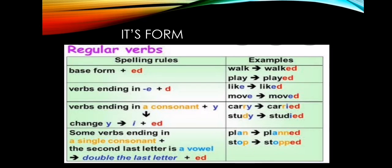Third rule: a verb ending in a consonant plus -y, we change -y to -ied. Like 'carry' — ending with -y, and before -y is -r. Is R a consonant or a vowel? Vowels are A, E, I, O, U. R is a consonant, so we change -y to -ied: 'carry' becomes 'carried'.